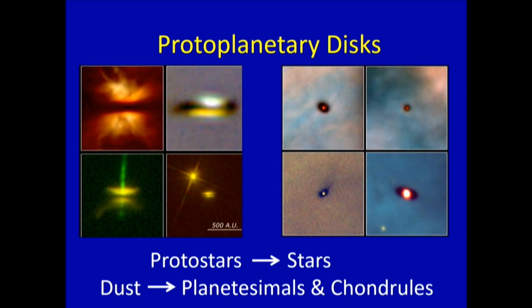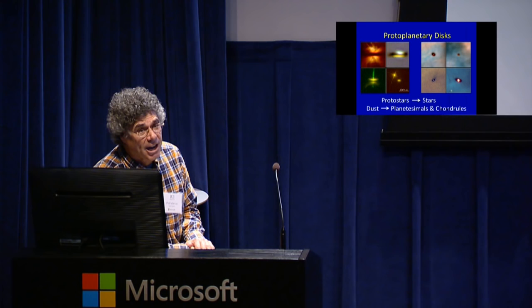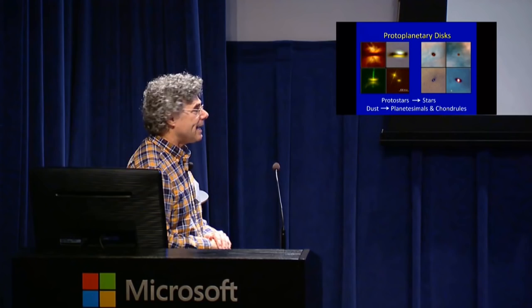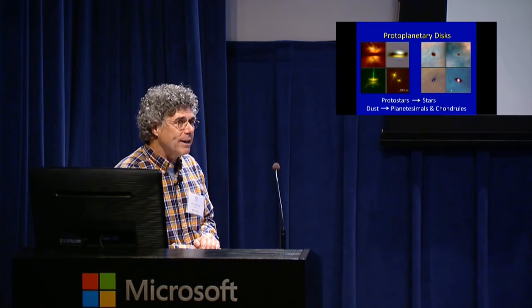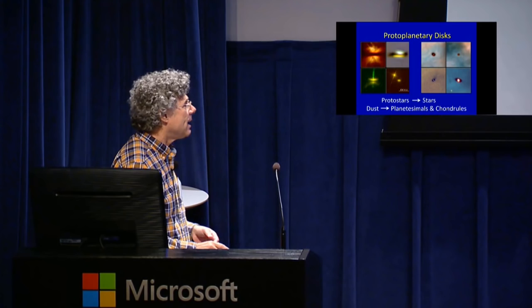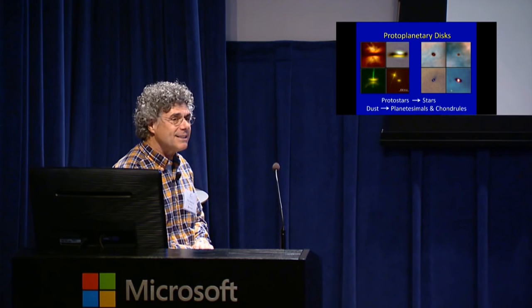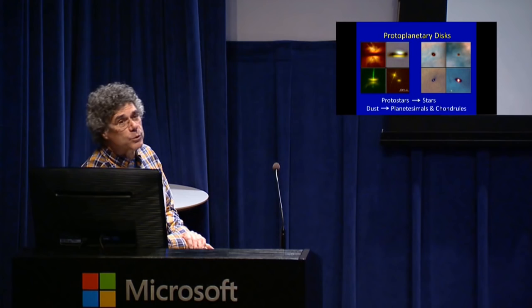On the left side are four views of protoplanetary disks edge-on. The protostar in the center is obscured by dust, with dust veins going across these objects. The characteristic diameter is about 500 AU, with 1 AU being the distance between the Earth and the Sun. We should think of protoplanetary disks as manufacturing plants required to do three things: turn protostars into stars by enabling them to get more mass, accumulate dust into planetesimals — the cores of planets — and explain the history recorded in chondrules found in meteorites.